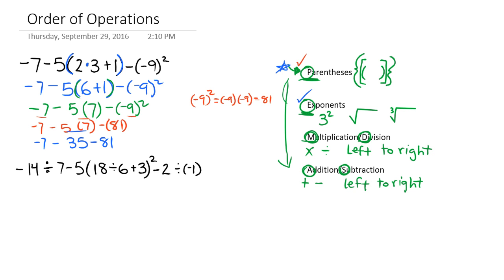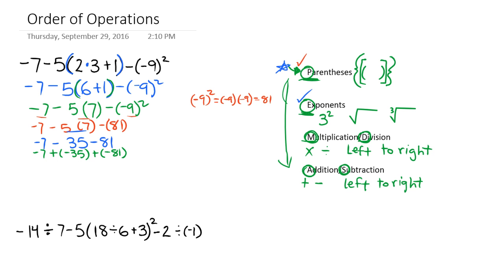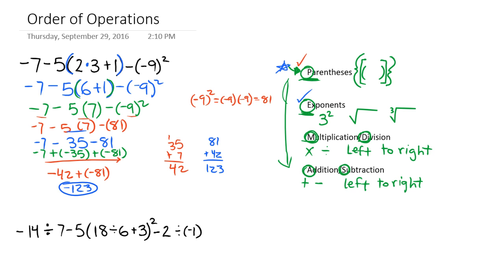Now we go left to right with addition and subtraction. I want you to make this all into an addition problem. So if we're subtracting 35, it's the same as adding a negative 35. And if we're subtracting 81, it's the same as adding a negative 81. Now what we need to do is move from left to right and just add these together. So negative 7 plus negative 35 — same sign when we're adding, we find the sum. So 35 plus 7 is 42, and we take their sign, giving us negative 42. Negative 42 plus negative 81 — same sign, we find the sum. 81 plus 42 is 123, and we take their sign. So we come out with negative 123.